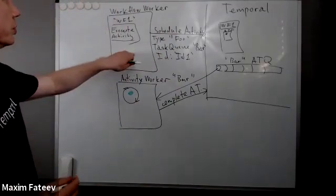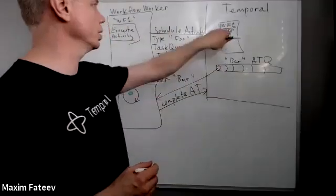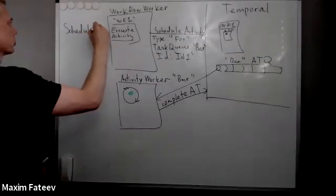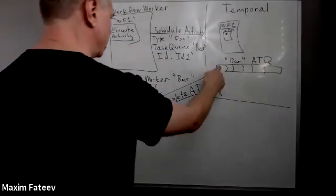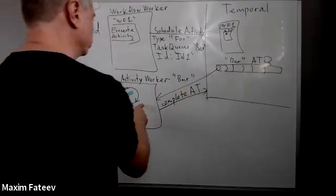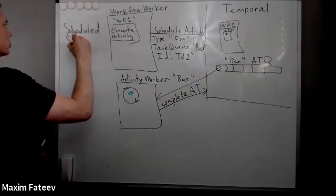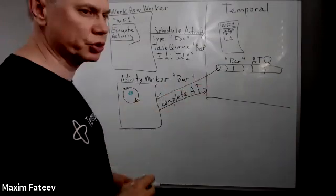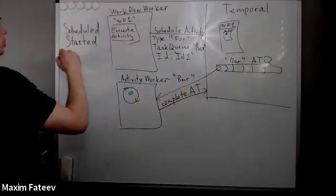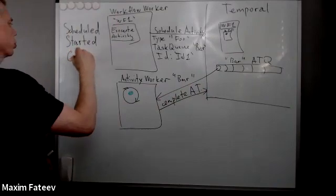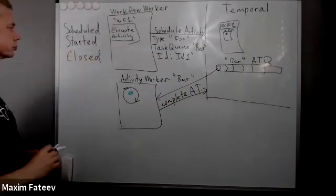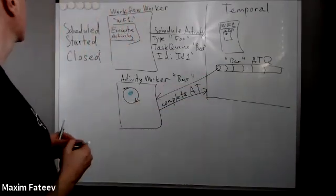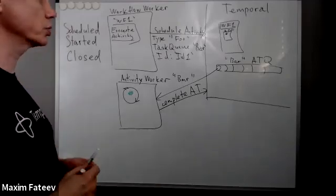Let's look at the states of the activity. After we put the activity in the task queue and updated the state, the activity will be in a scheduled state. After it's picked up by the worker it will be in a started state. Then after completion it will be in a completed state, also called a closed state, because it can also fail — not only complete — so if it's failed it's also a closed state.